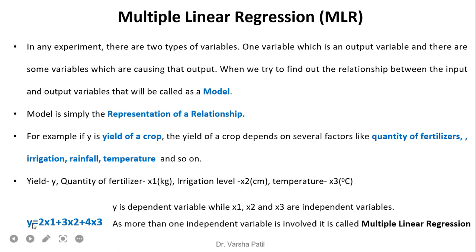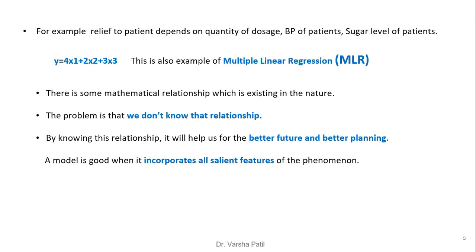For example, the equation or model is y = 2x₁ + 3x₂ + 4x₃. Here y is the dependent variable while x₁, x₂, x₃ are independent variables. Our problem is to find out these parameters 2, 3, and 4, which are nothing but the slopes of this line equation. As more than one independent variable is involved, it is called multiple linear regression.